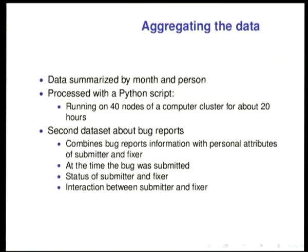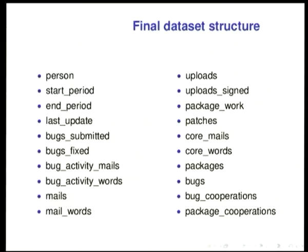I also created a second dataset about bug reports, with one entry per bug report containing information about the submitter and the fixer, what they contributed to Debian, some additional information about the bug, and about the interaction between submitter and fixer — whether they had interacted before and on what. The final data set structure for project activity includes: the person, the period, when it was last updated, bugs submitted, bugs fixed, bug activity, count of mails, count of words, and so on.